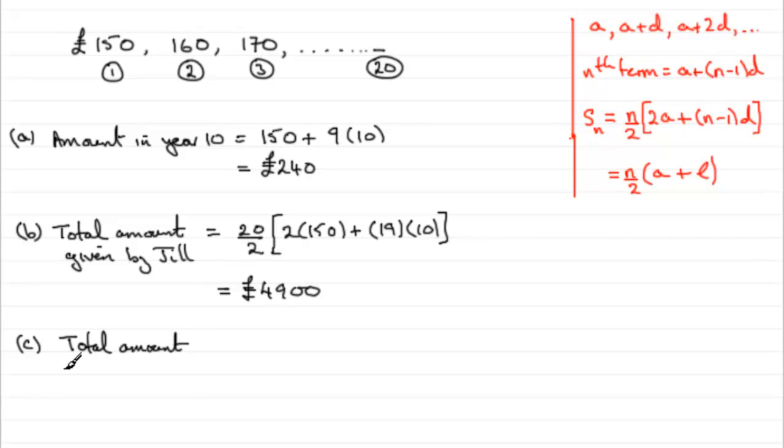Total amount given by Kevin. So, it's going to be equal to n over 2, 20 over 2, again, twice the first term. So, he put in 8 pounds, okay, in the first year.